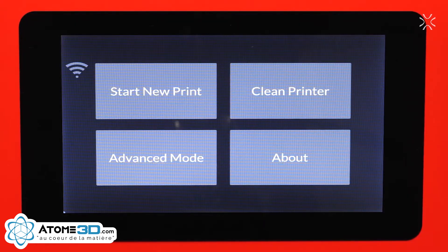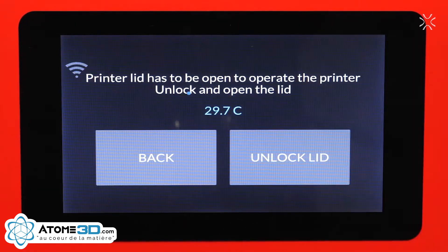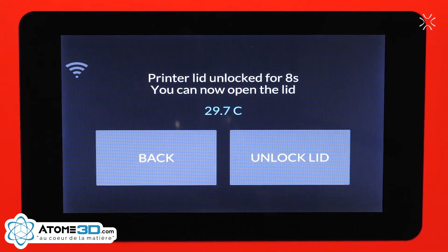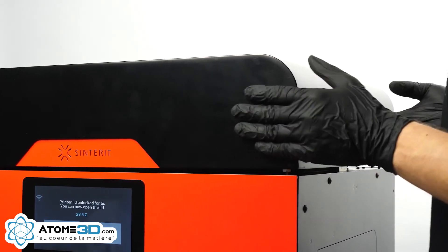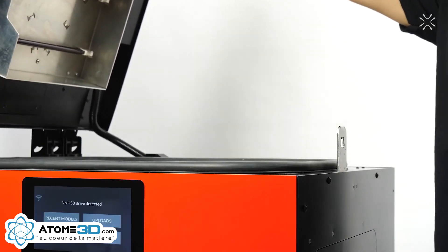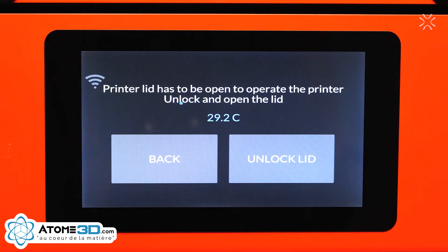Follow the instructions on the screen. Click Start New Print. Press Unlock Lid. The lock remains released for 10 seconds. To lift the lid, press it and then pull it up. If the temperature inside the printer is over 50 degrees Celsius, it will not open. You can monitor the current temperature on the screen.